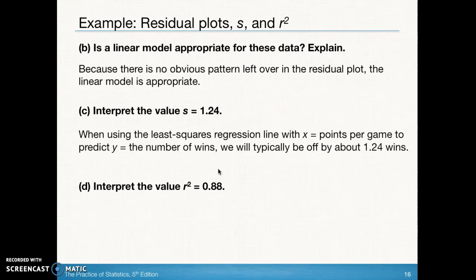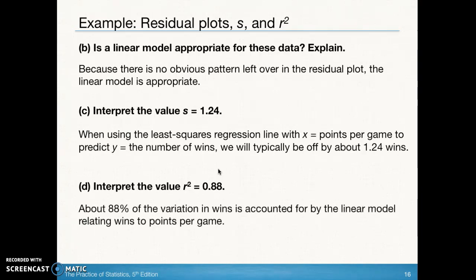The last part of the question is to interpret the value r squared which is 0.88. This is where we go back to that definition of percent variation which is accounted for or explained by the use of a linear regression line. We would say approximately 88% of the variation in number of wins is accounted for by using a linear model relating wins to points per game.